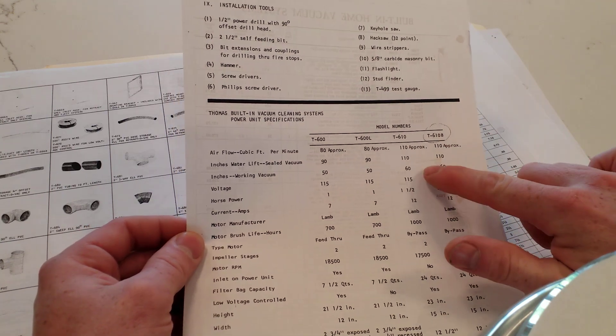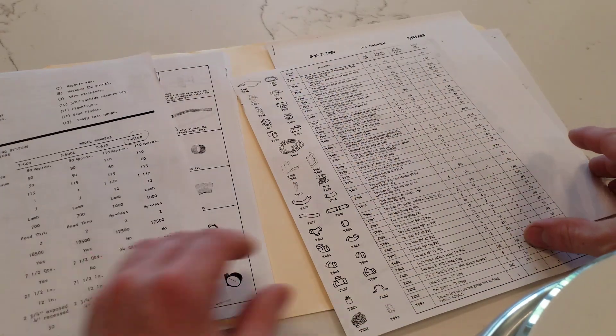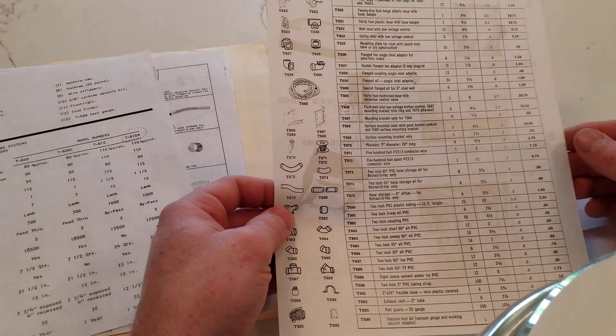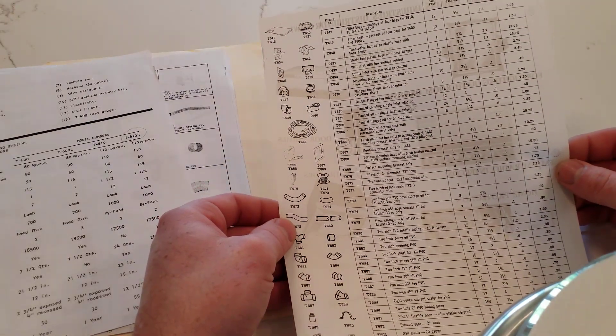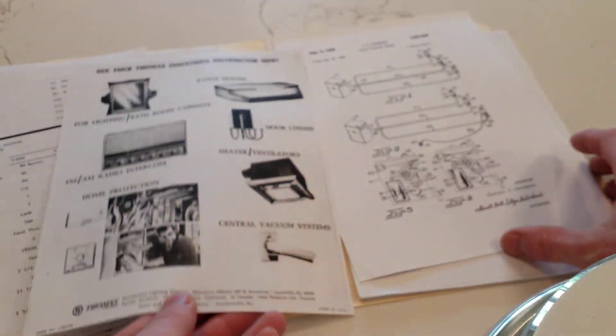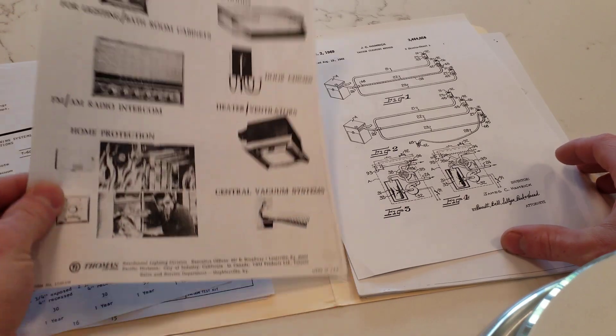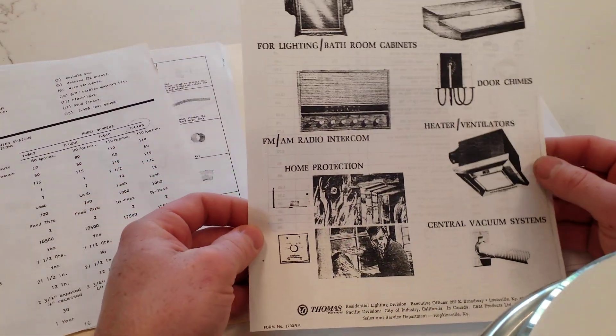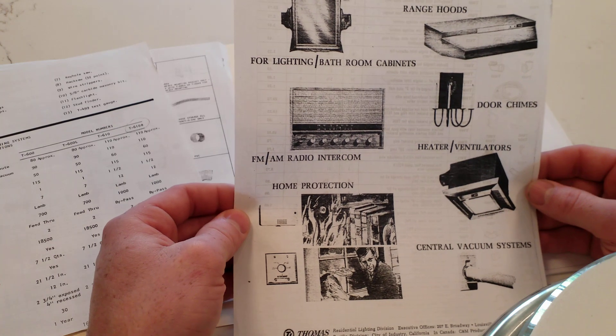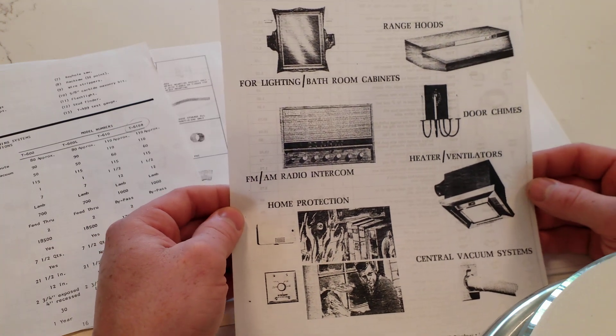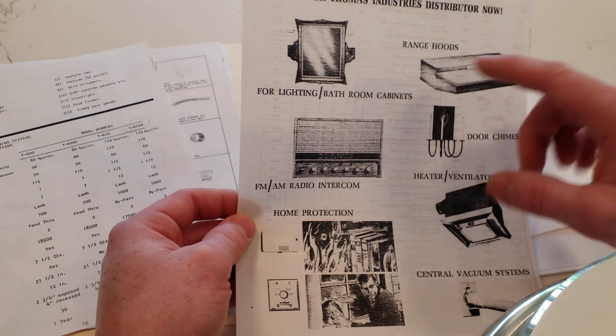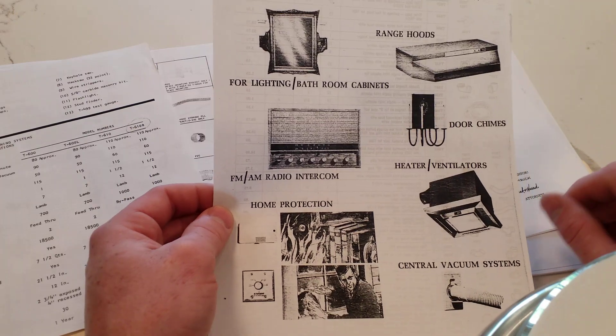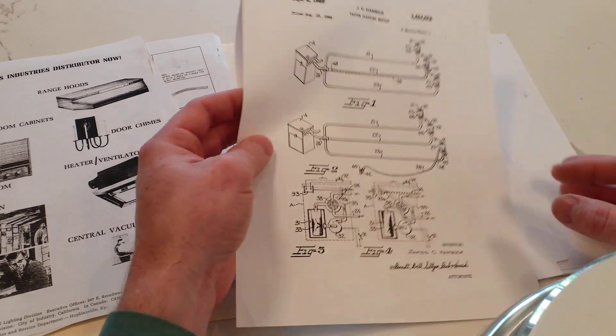You can see by that 110 inches of water lift that would have used the 115334 motor. And according to this, Thomas Industries, kind of like Newtone and Fasco and Rittenhouse and whoever else, they made a bunch of different home products. They weren't just in the vacuum business.